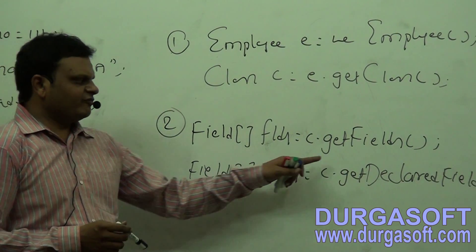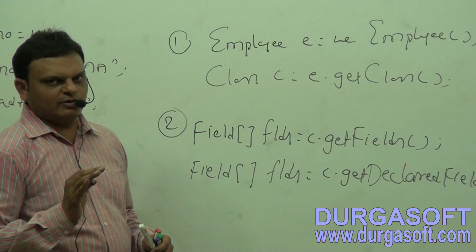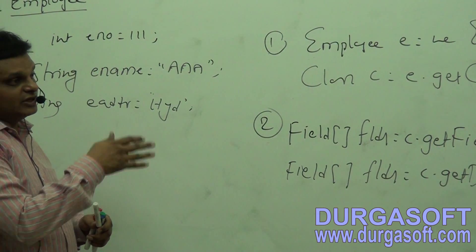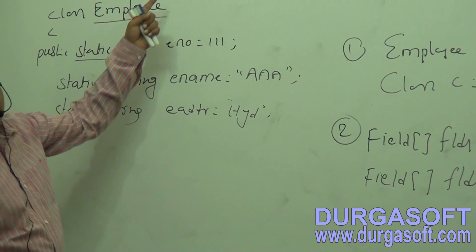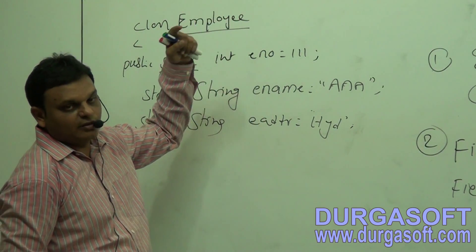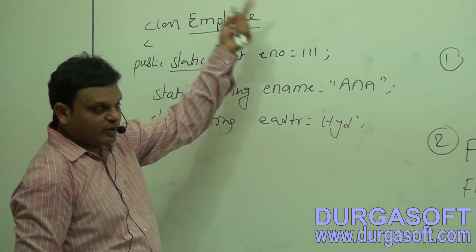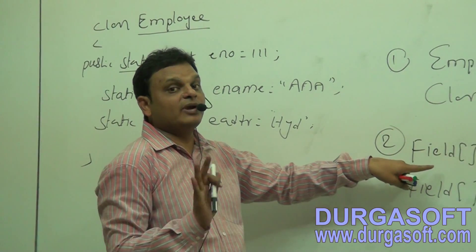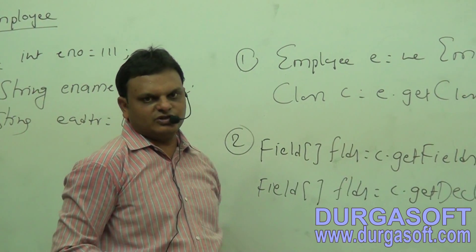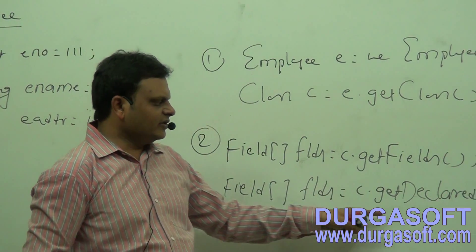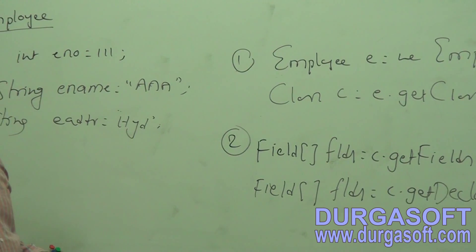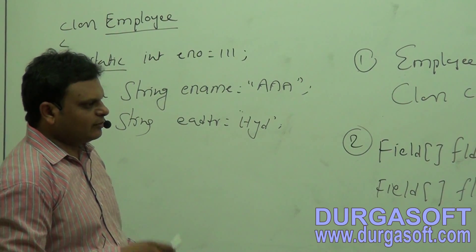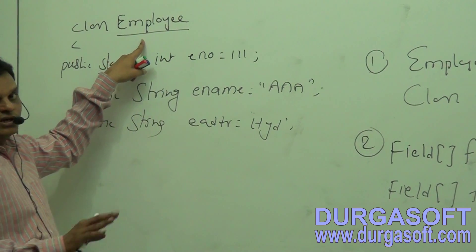What is the difference between getFields() and getDeclaredFields()? getFields() can be used to get all the public variables metadata which are available in the respective class — that is the Employee class — and also available in the superclass of the Employee class. So superclass public variables as well as Employee class public variables both will be returned in the form of a field array.